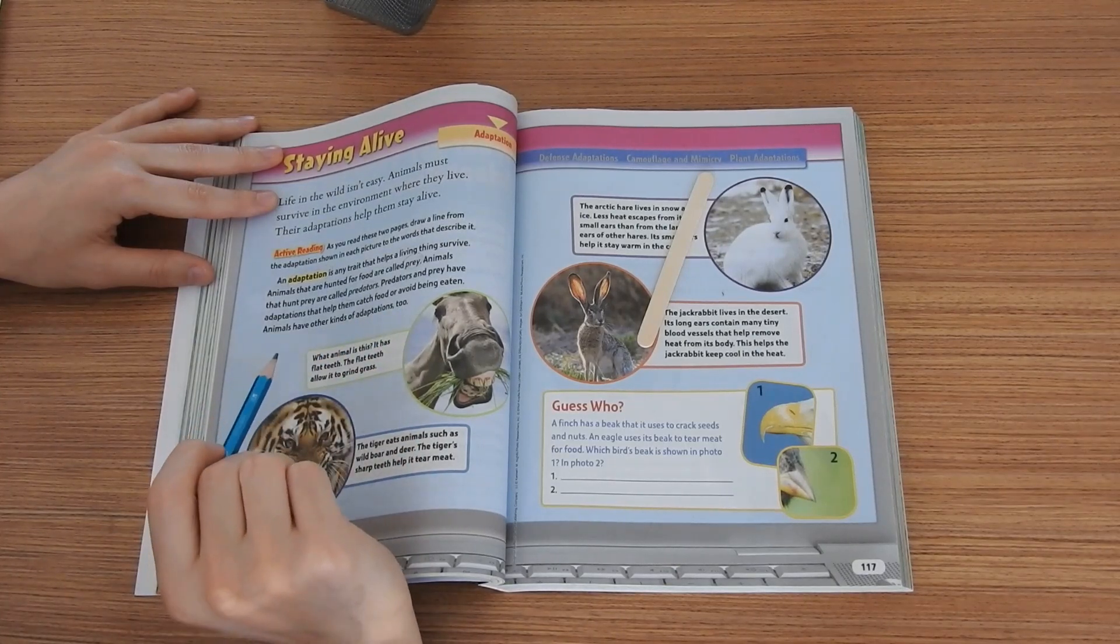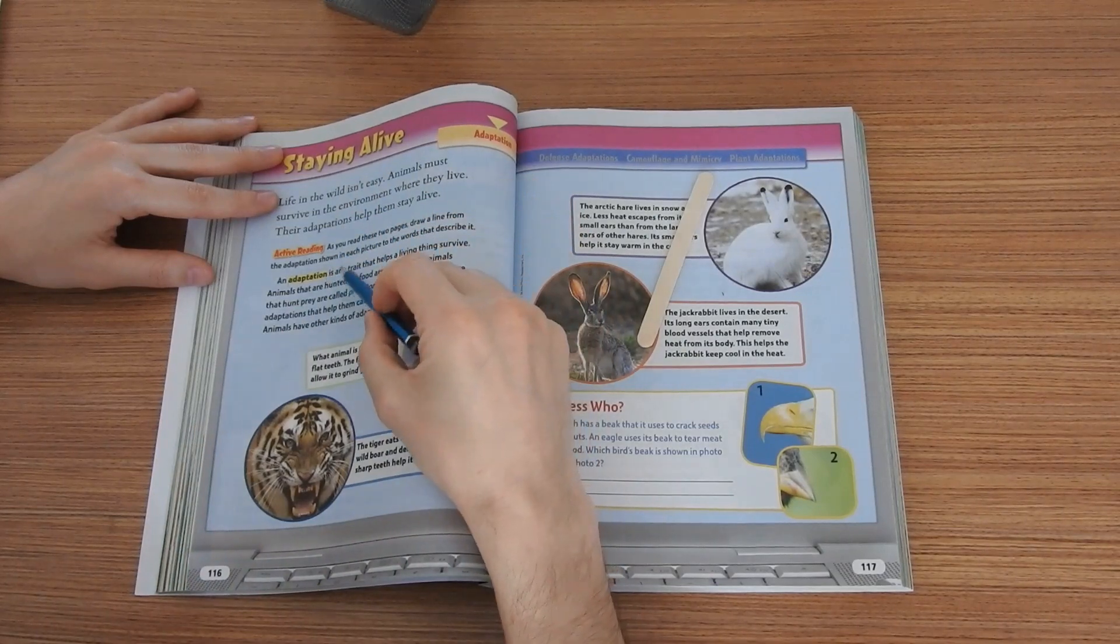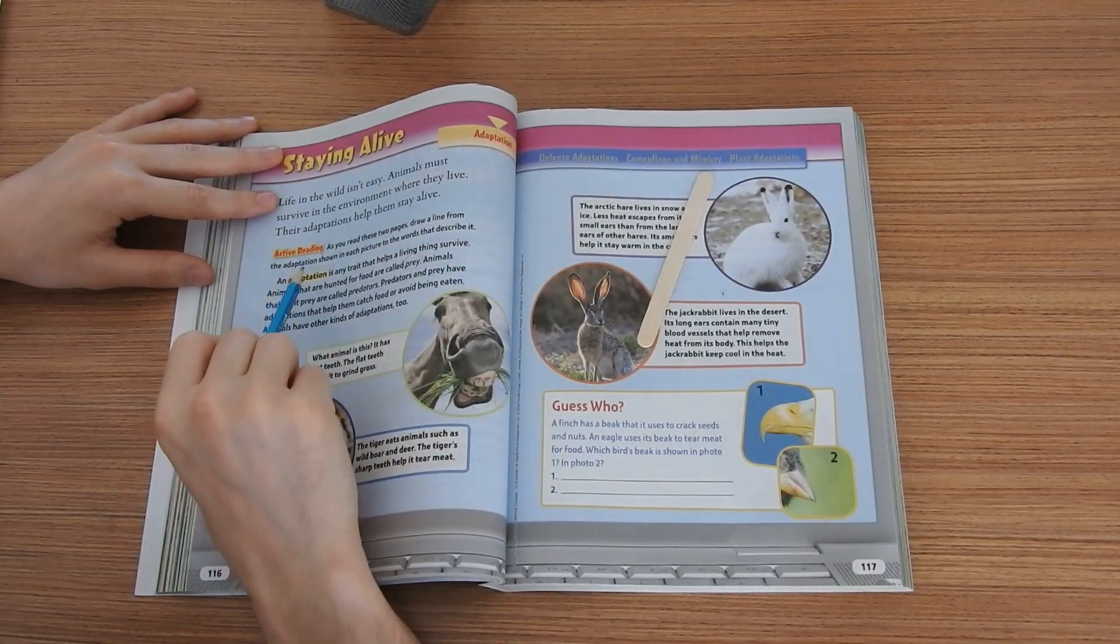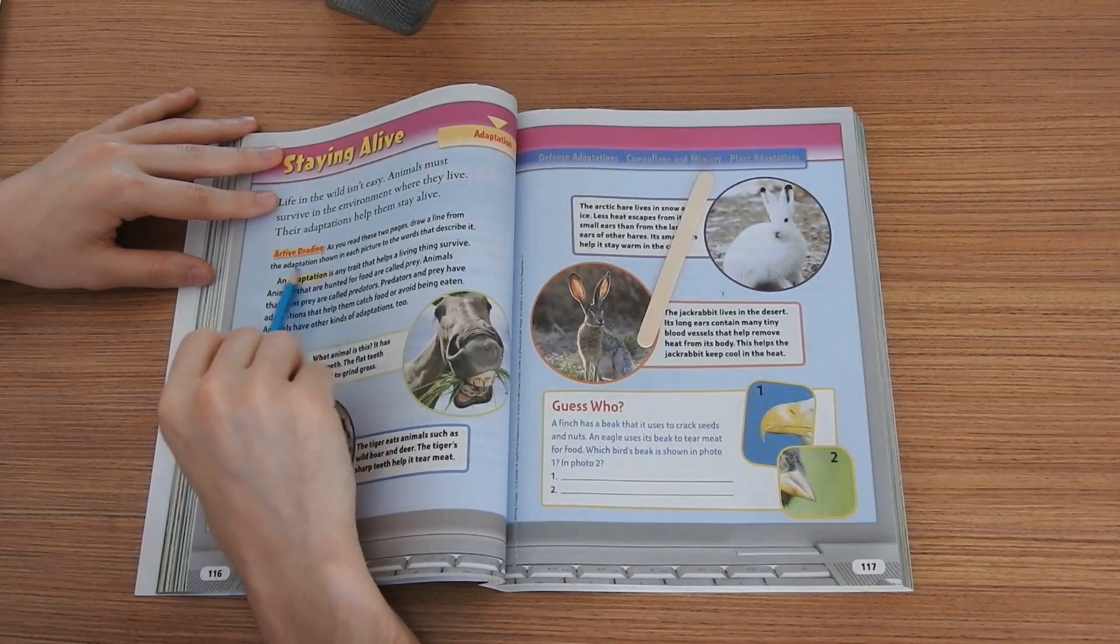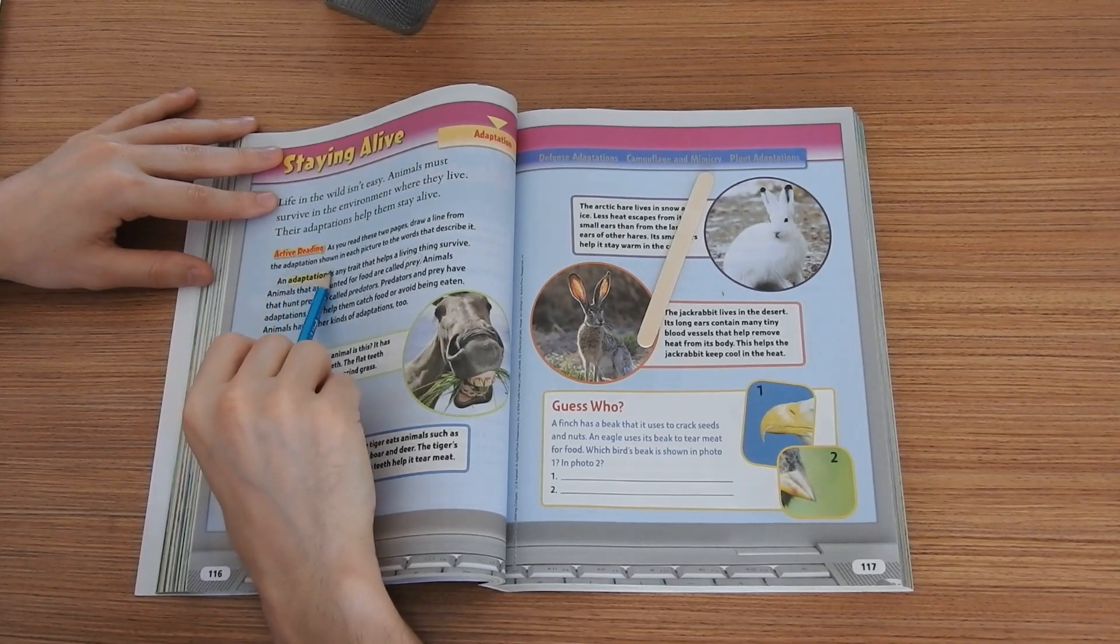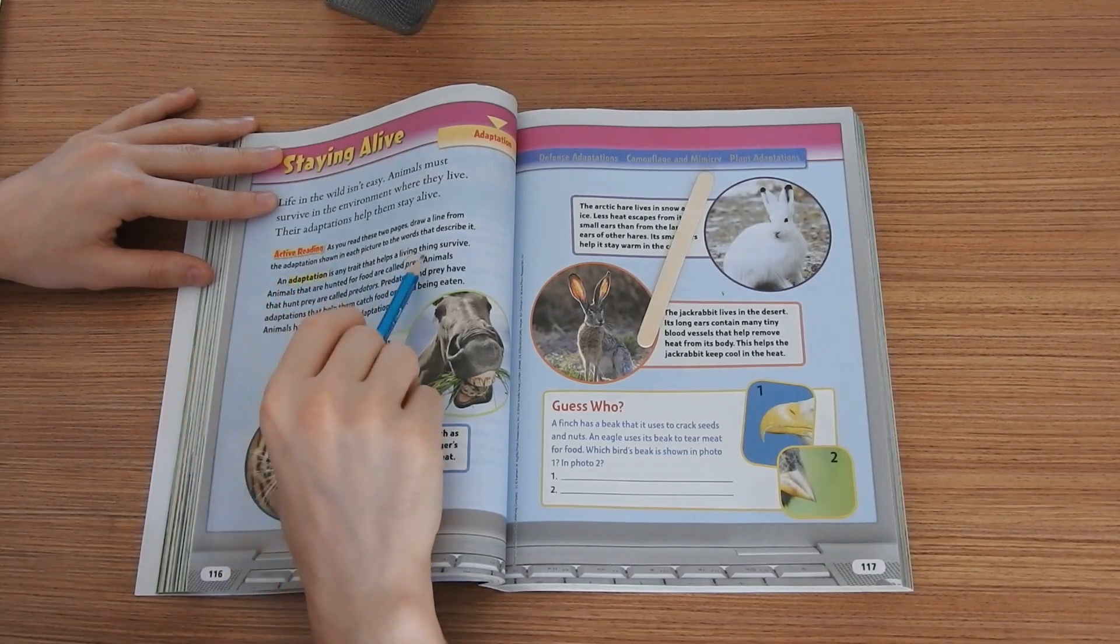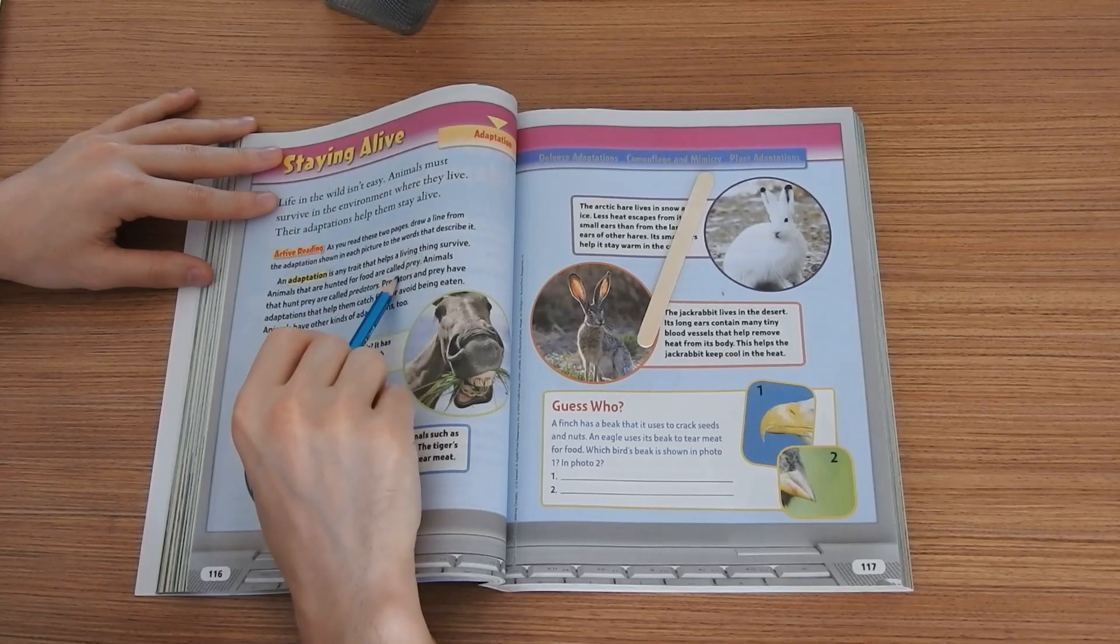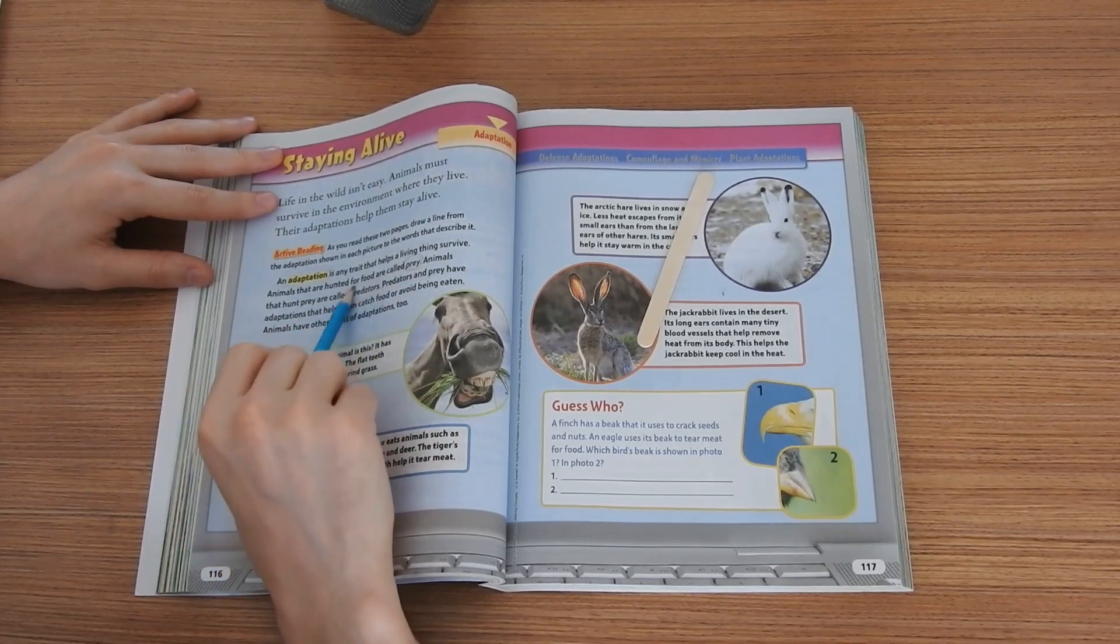So now here we have three main terms or words that we need to know. We have adaptation, we have the word prey and we have the word predators.